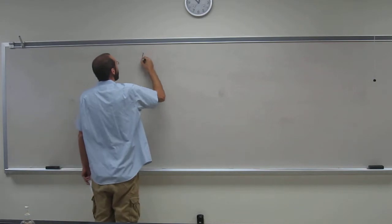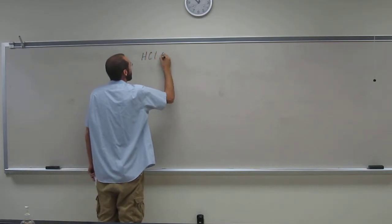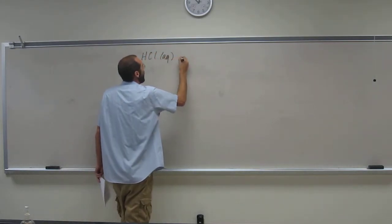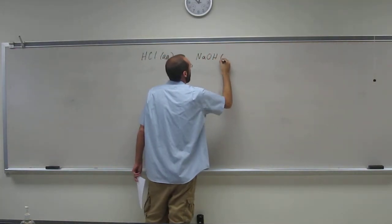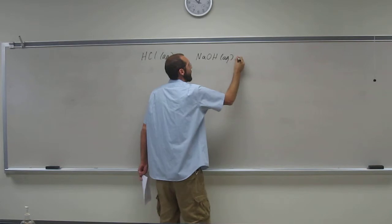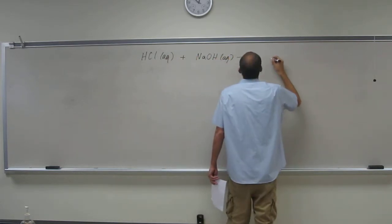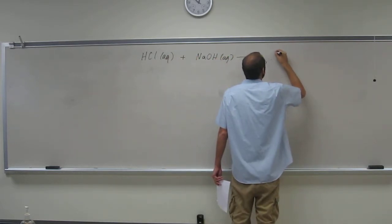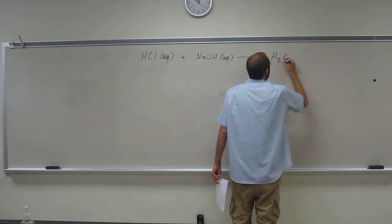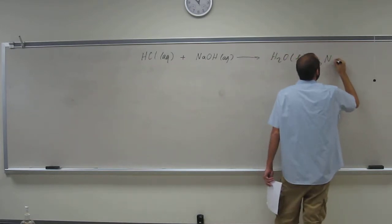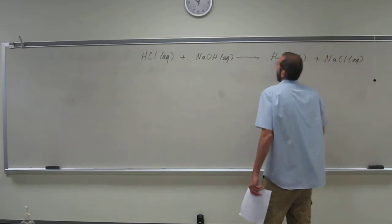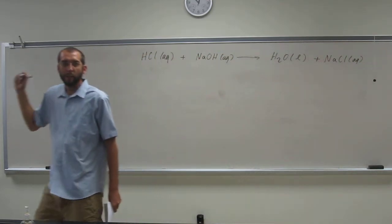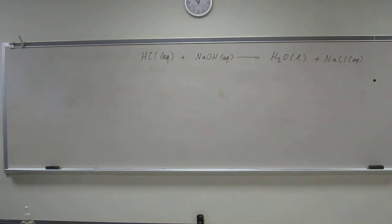So the first thing you have to realize is that you're reacting HCl with NaOH. This is a neutralization reaction, so you're going to make H2O plus NaCl. It's a double displacement, acid-base neutralization reaction. Balanced already.